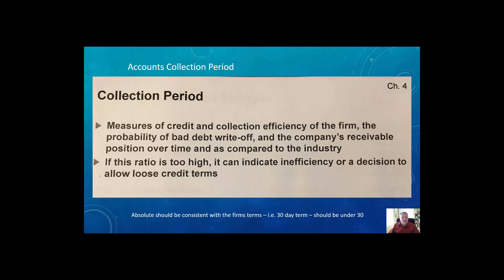When we look at the collection period, it measures the credit and collection efficiency of the firm. The longer that collection period, the firm may not be efficient in collecting receivables. There may be increased probability of bad debt, but we need to look at them over time to see whether something's getting better or worse, and compare to the industry. If the ratio is too high, it can indicate inefficiency or a decision to allow loose credit. It also needs to be consistent with the firm's terms — some companies sell with 30 days, so you should be under 30 days in your collection period.